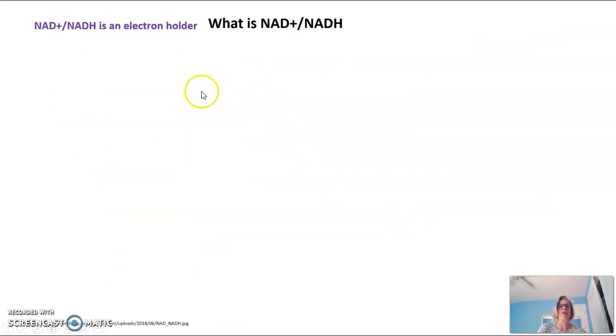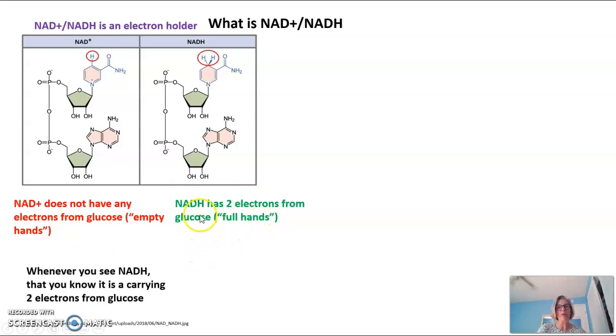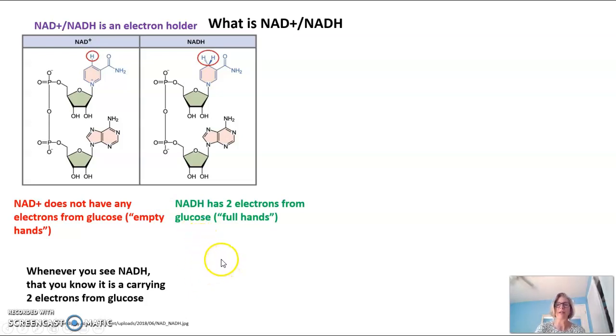So what is NAD+, or NADH? Well, NAD+ and NADH, it's an electron holder. NAD+ is what it is called when it does not have any extra electrons from glucose. So it has a positive charge. And I like to think of this molecule as something that has two hands that are empty. It doesn't have any extra electrons. NADH, when it has this extra hydrogen molecule here, is what the molecule is called when it has two electrons from glucose. I think of those as full hands as having an electron in each hand. So NAD+ does not have any extra electrons from glucose. NADH has two electrons from glucose. So whenever you see the molecule NADH, you know that it is carrying two electrons from glucose. And the energy in glucose is in those electrons. So effectively, it's carrying the energy from glucose.